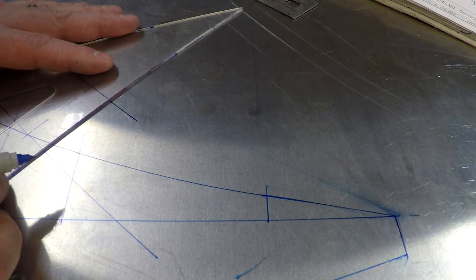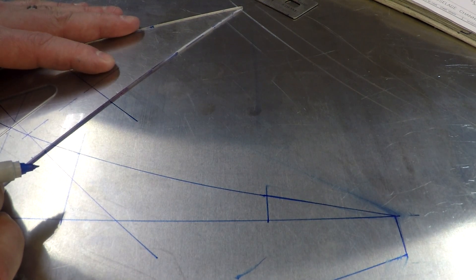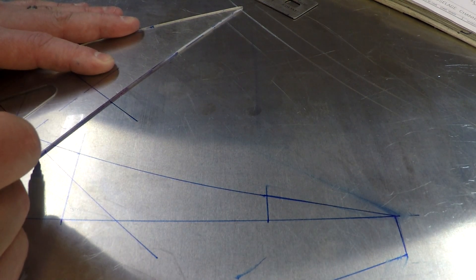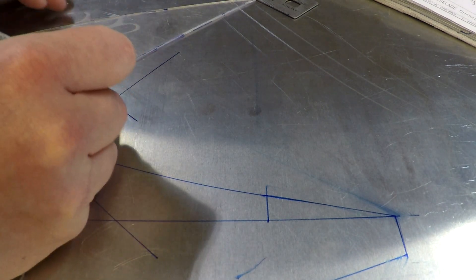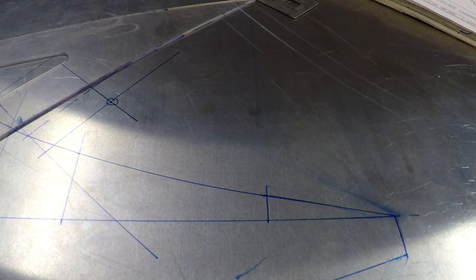So that I can make a crosshair here. So now I've got, I'm going to extend that one as well, make it a little bit more visible. So now this is the crosshair for my, where my circle template is going to go.